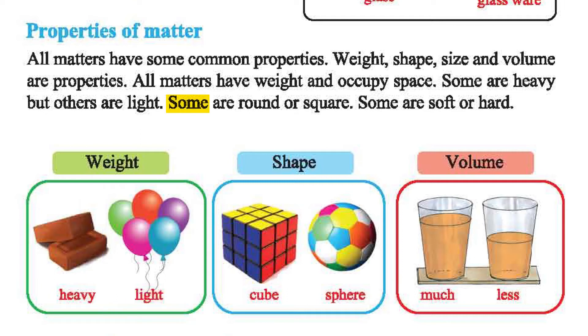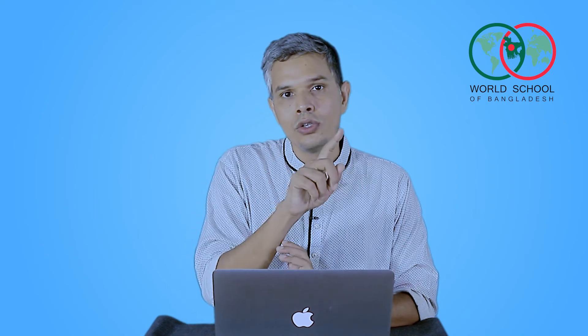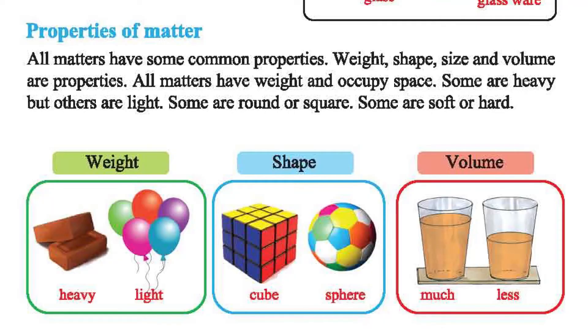Some things are round or square. Some are soft or hard.